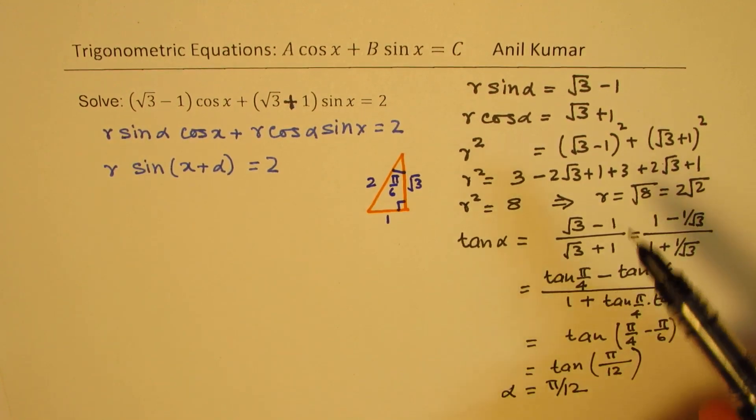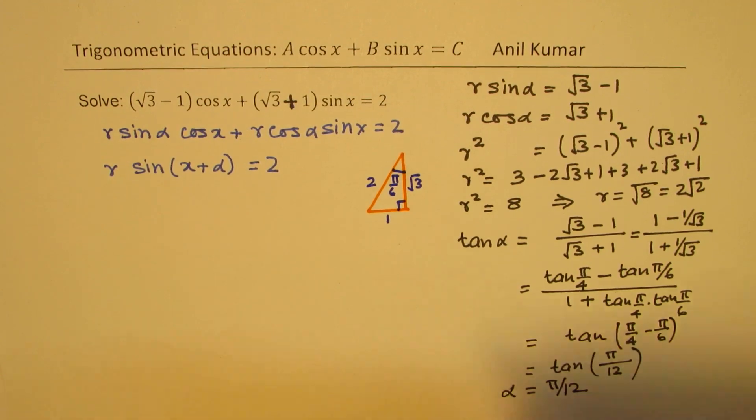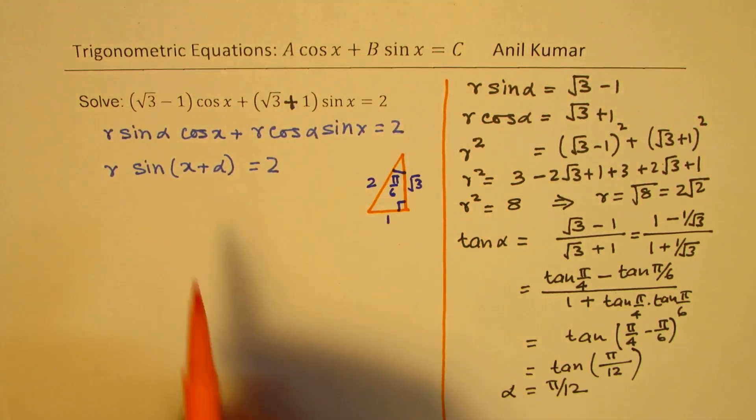So we know angle alpha is basically pi by 12. Is that clear to you? So there's a lot of work which we have to do in this substitution. That coefficient makes it slightly more complicated, but anyway, we got the value of r, we got the value of alpha.